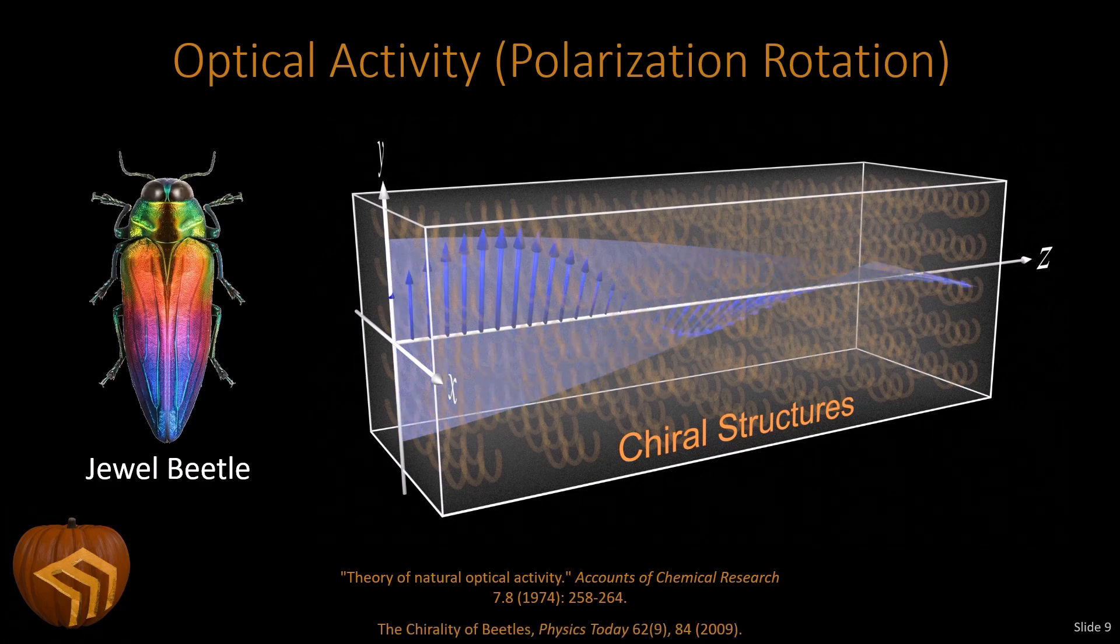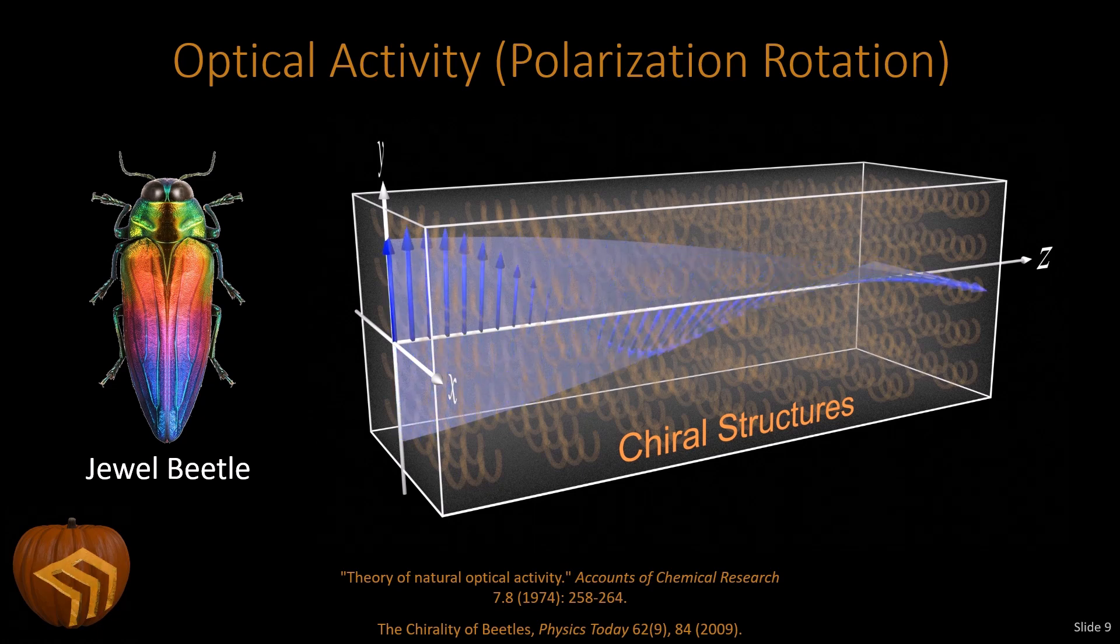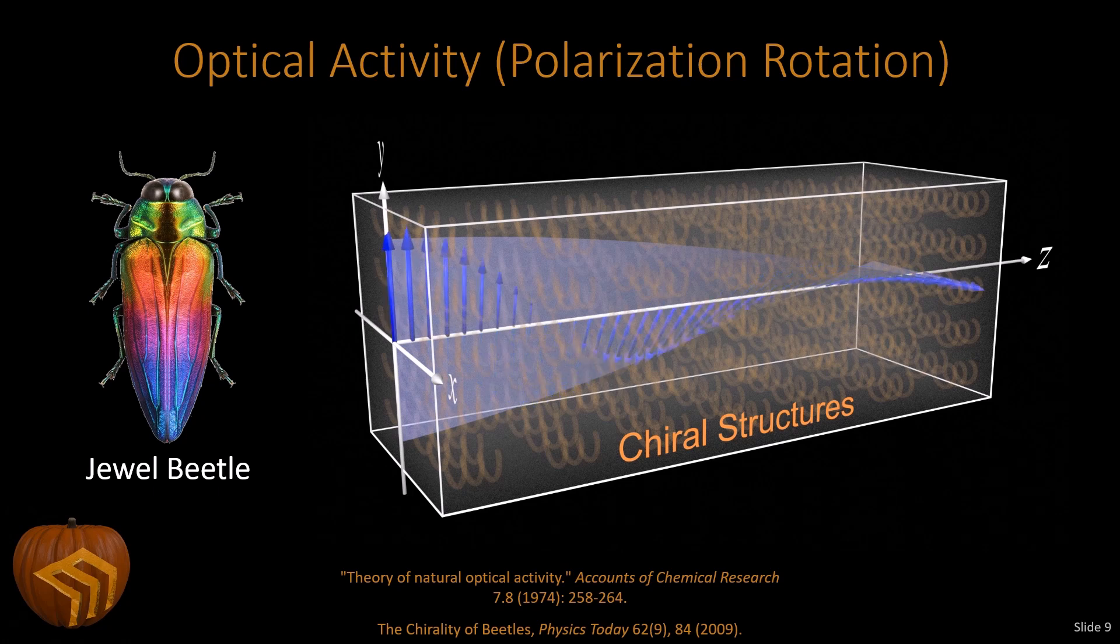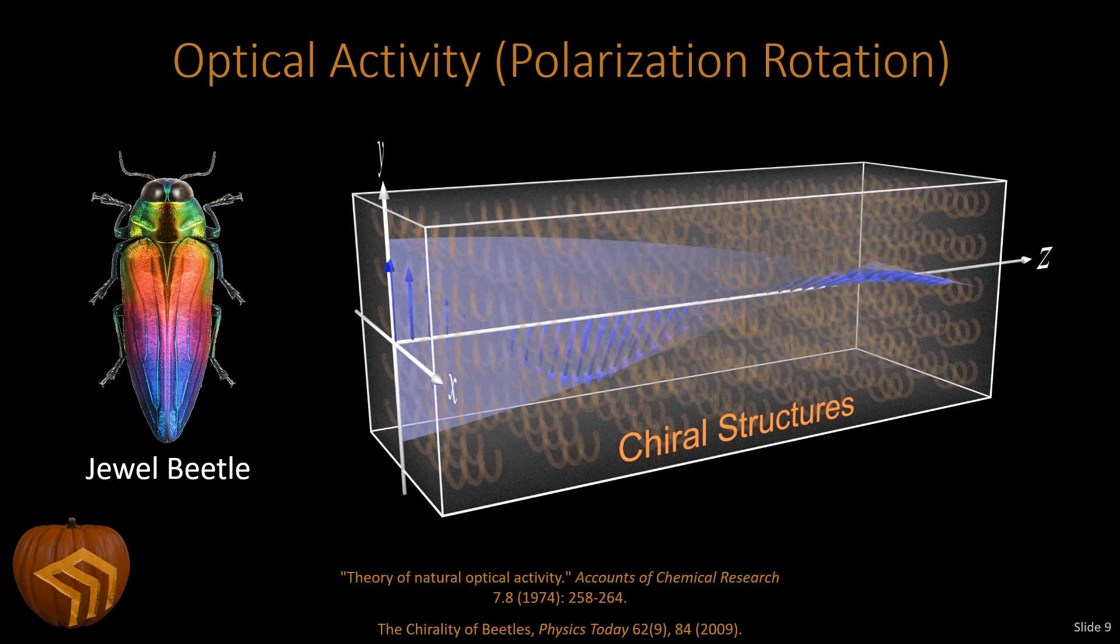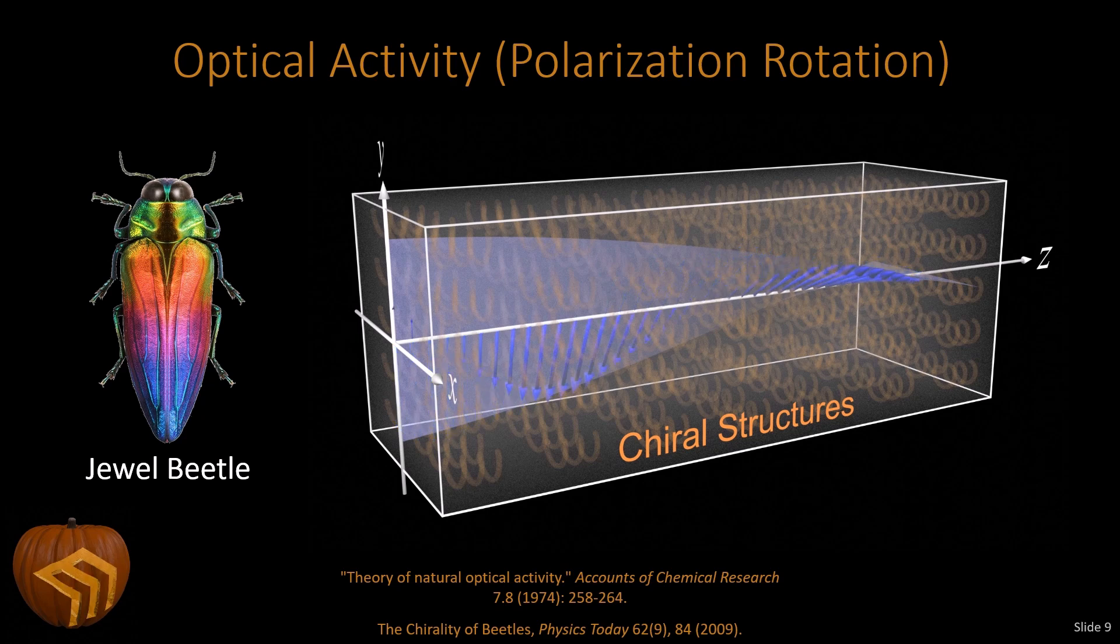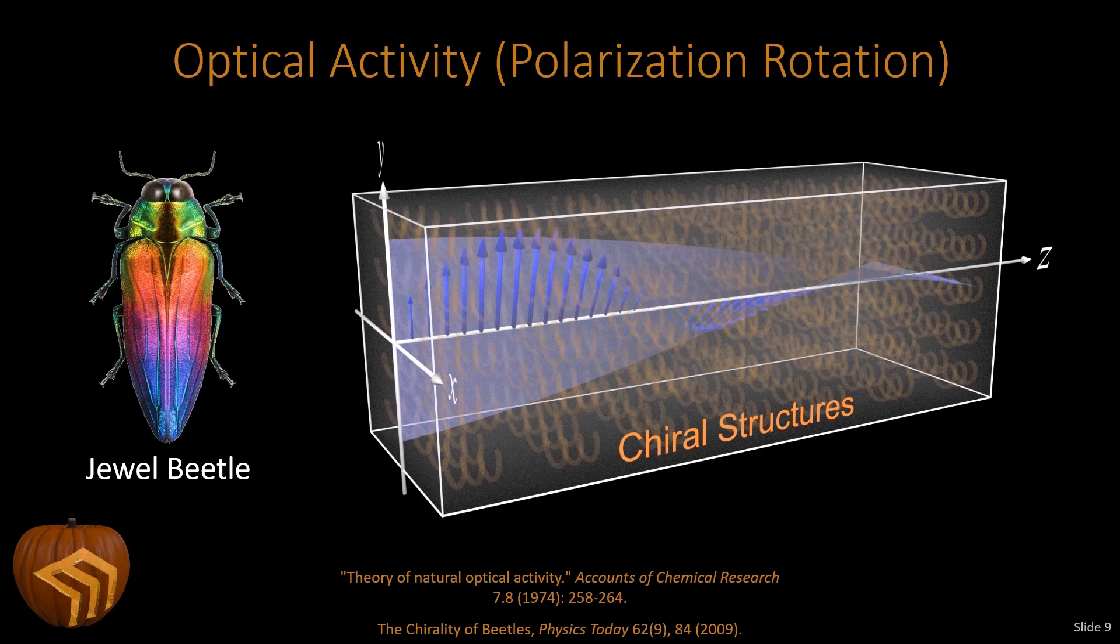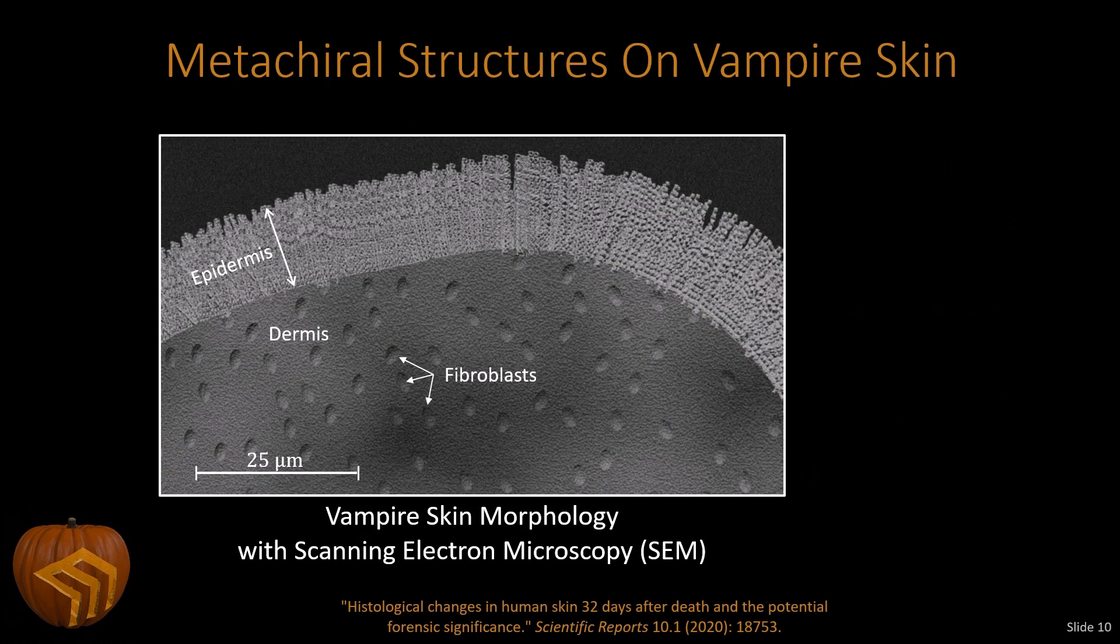I want to point out that this optical activity can be found in nature. A great example that I really love are these jewel beetles. So in its exoskeleton, it has chiral structures that produce optical activity. In this case, it gives it that brilliant colored metallic sort of look. But you'll find optical activity structures that lead to optical activity in fish, in butterflies, other beetles, and probably other places I'm not even thinking.